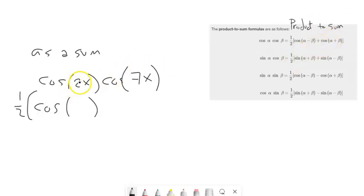First one minus the second one. So 2x minus 7x. So notice this is going to be a negative 5x, plus them added together. And there's one more thing we can do.